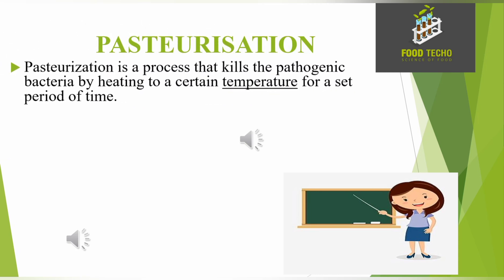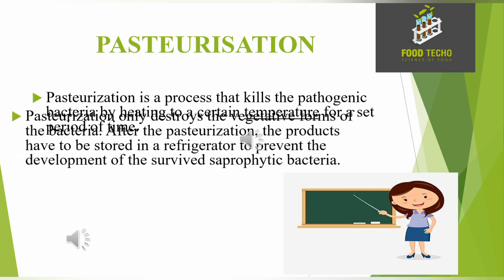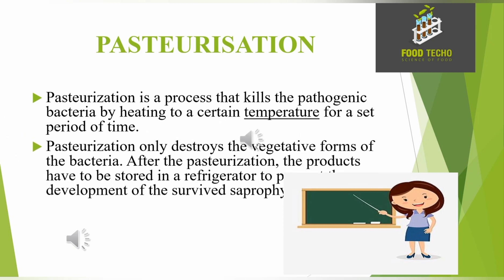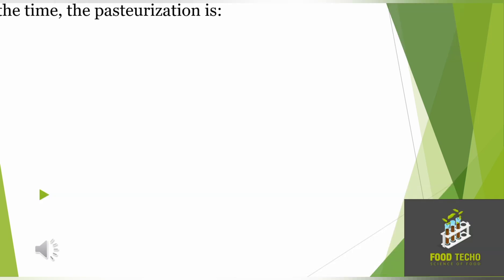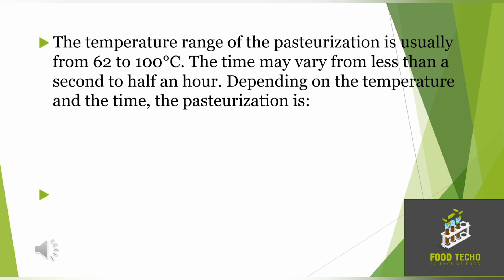Pasteurization is a process that kills the pathogenic bacteria by heating to a certain temperature for a set period of time. Pasteurization only destroys the vegetative forms of the bacteria. After pasteurization, the products have to be stored in a refrigerator to prevent the development of the survived saprophytic bacteria. The temperature range of pasteurization is usually from 62 to 100 degrees C, and the time may vary from less than a second to half an hour.